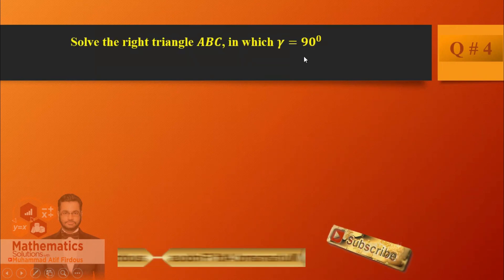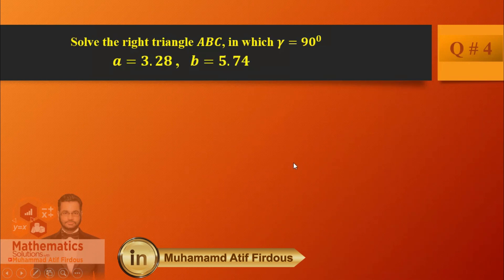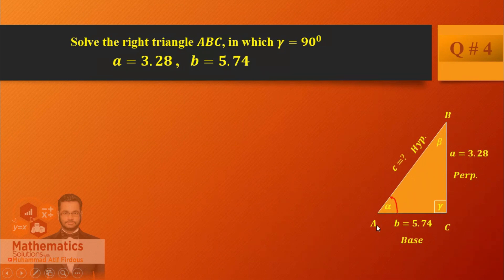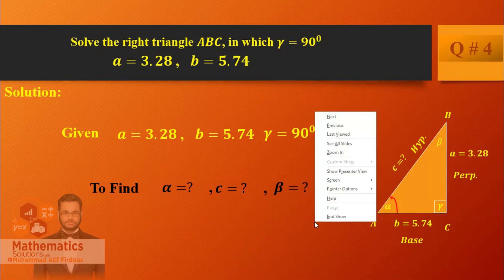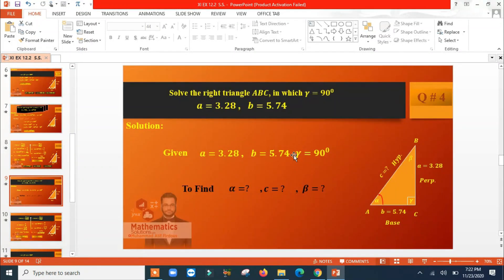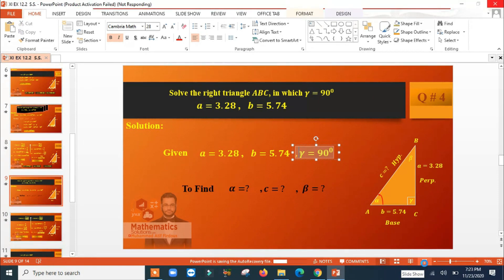Again, a right angle triangle is given in which gamma equals 90 degrees. This time side B and side A (small a and b) are given. You have to find the hypotenuse C. Two sides A and B and one angle gamma equal to 90 are given. So we need to find angle alpha, side C, and angle beta — two angles and one side.